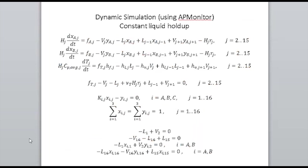The model I used for this reactive distillation for a fixed holdup: we have component balances on each stage and enthalpy balances on each stage as our dynamic equations. The reaction is limited to stages 2 to 10 but you still have dynamic component mole balances. Then you have algebraic constraints below: vapor-liquid equilibrium and overall mole balance on the various stages.